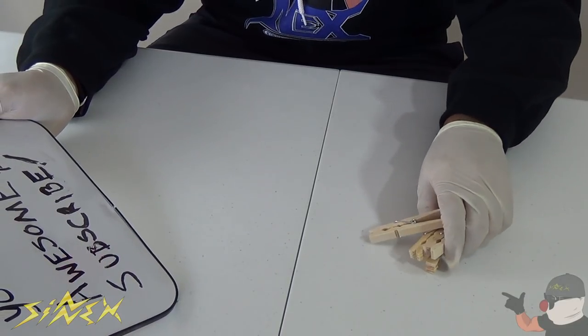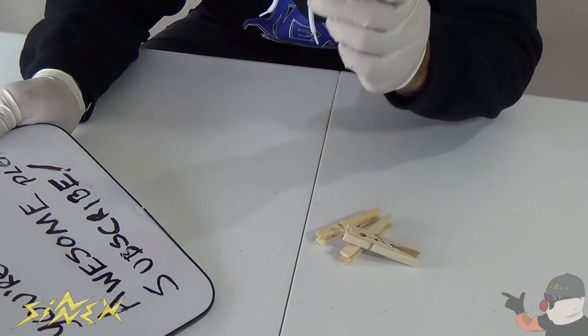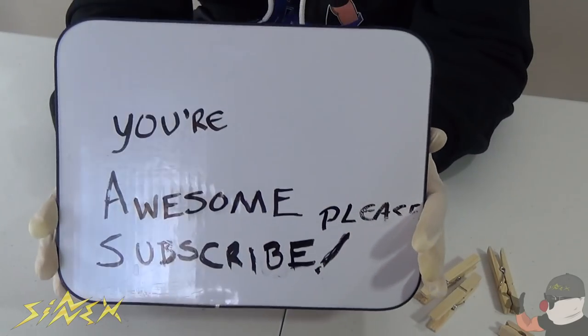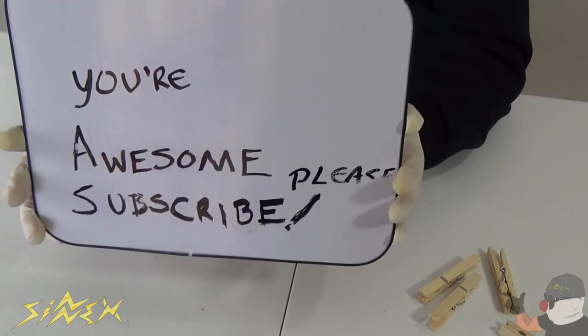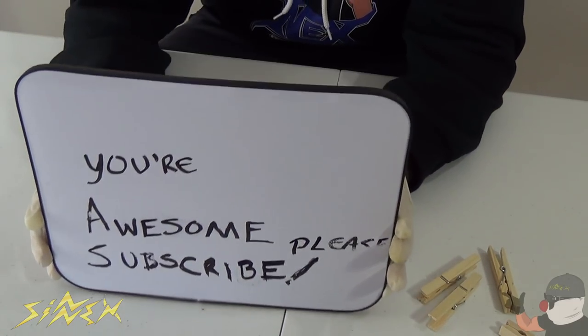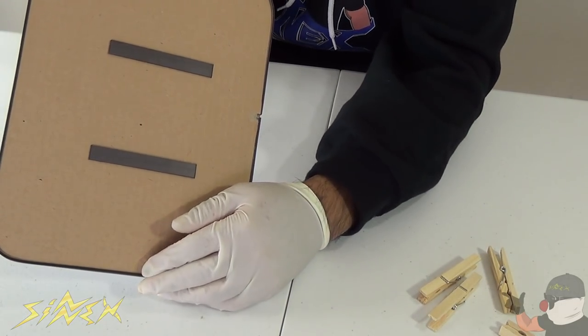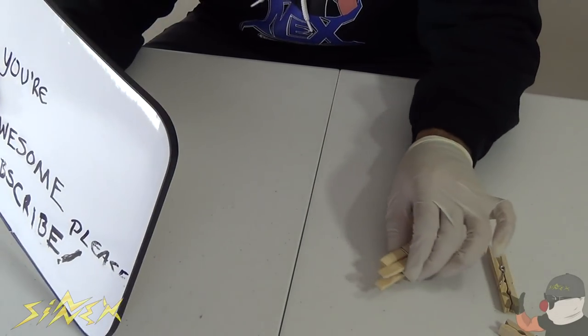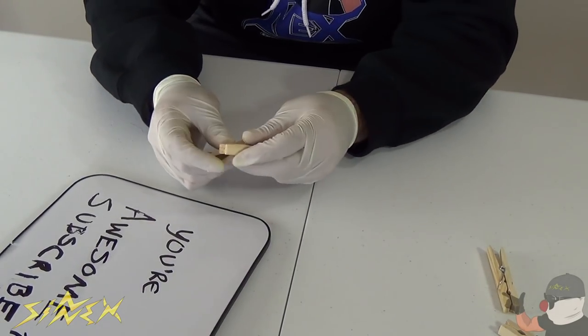For this first hack you're gonna need four clothespins. Throughout this video we're gonna be using these types of clothespins, the wooden ones. Here I have a little board that I wrote something on and I want to hang this so everybody can see. But this one doesn't have a stand in the back and I can't lean it against anything. So I'm gonna create a little stand for it using clothespins.